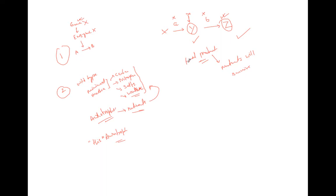Second, if we provide the second-to-last product, only those organisms with a mutation before that product will survive. If there is a mutation in the second-to-last enzyme, only providing the last or second-to-last substance will allow survival. It's a bit confusing, so let's look at a worked problem.